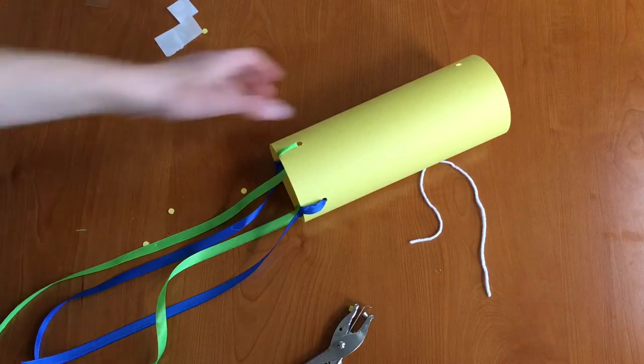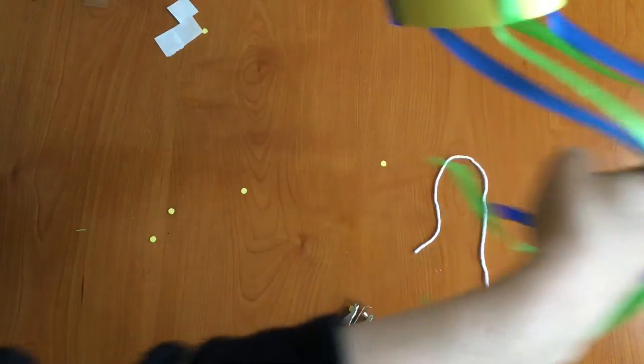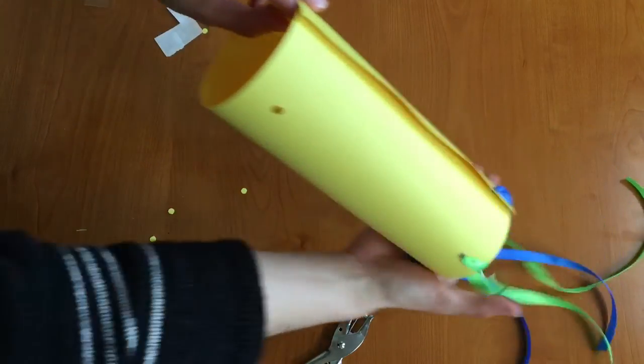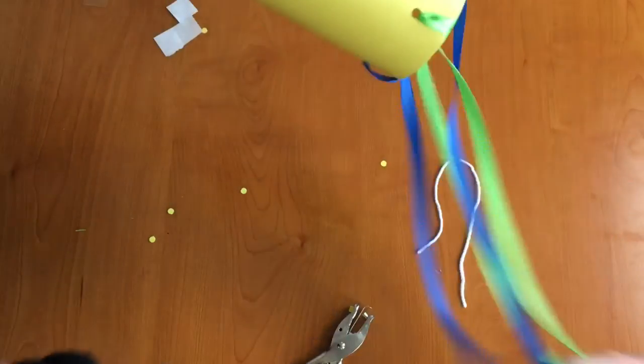All right, so now I have my ribbons tied onto the bottom of my wind sock and what's going to happen is when the wind blows through the tube it's going to make these ribbons spiral in the air very beautifully.